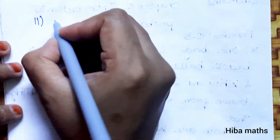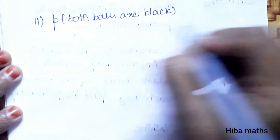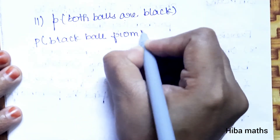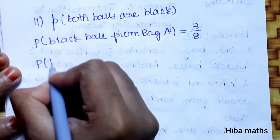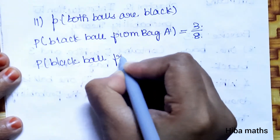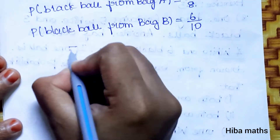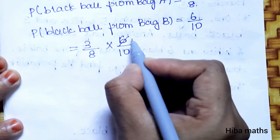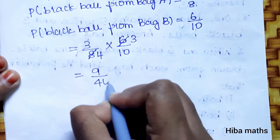Second condition — both balls are black. P(black from Bag A) = 3/8, and P(black from Bag B) = 6/10. Multiplying: 3/8 × 6/10 = 18/80 = 9/40. So the probability that both balls are black is 9/40.